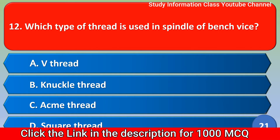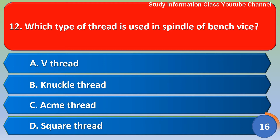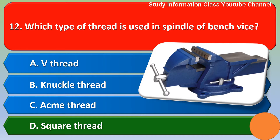Next question: which type of thread is used in the spindle of a bench vise? Options: A) red knuckle thread, B) acne thread, C) square thread. The correct answer is option D, square thread.